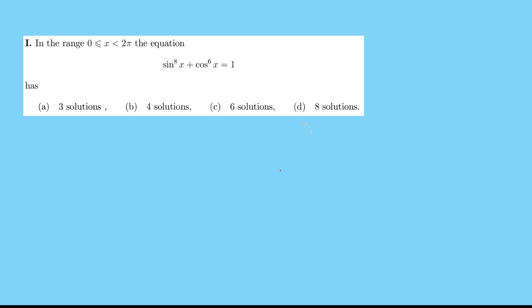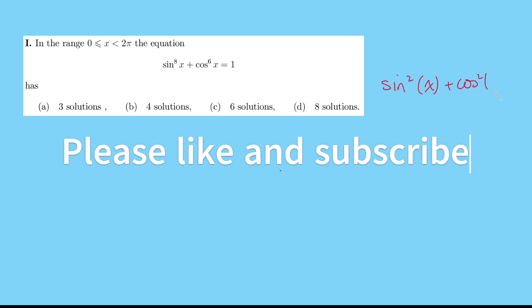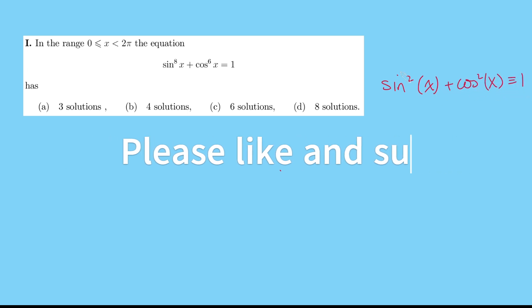Let me dive into a solution. This equation here looks awfully similar to the Pythagorean identity, sin squared x plus cos squared x is 1. And this is going to be our starting point here. I'm going to call sin squared x A and cos squared x B. And then this equation here is simply A to the 4 plus B cubed equals 1.